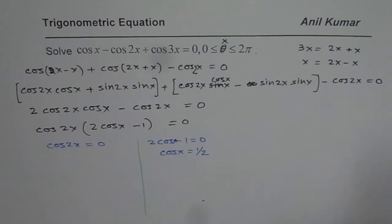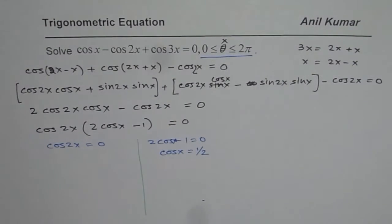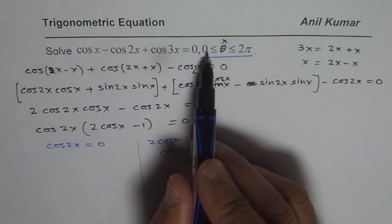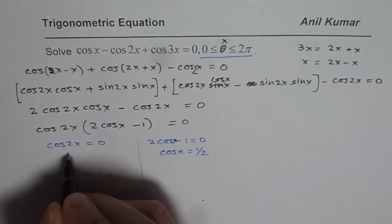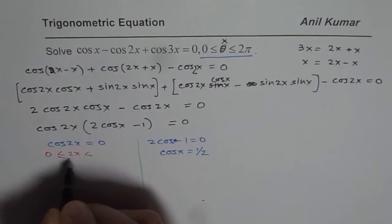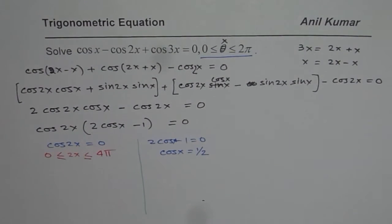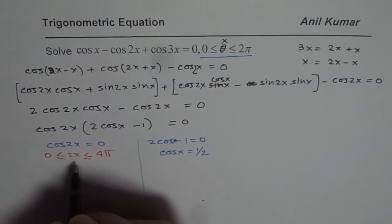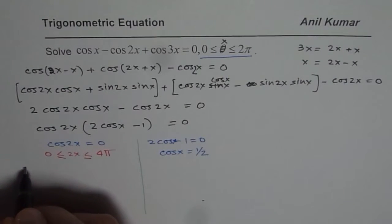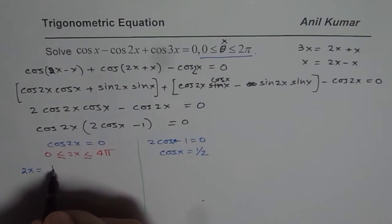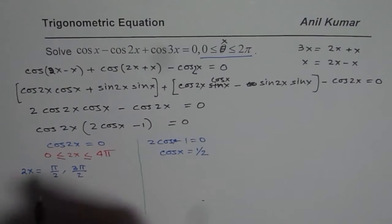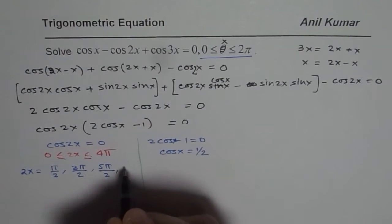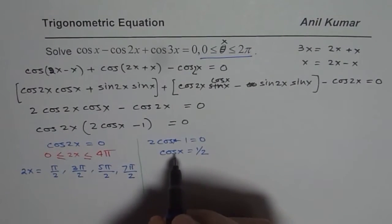We have cos 2x equals 0. We are working in the domain of 0 to 2π. When we say cos 2x is equal to 0 in the domain of 0 to 2π, then for 2x, we have to multiply this. So for 2x, the domain becomes 0 to 4π. Cos function is 0 for π/2 and 3π/2. So we have 2x equals π/2, 3π/2. Now we have to go one more circle. That means add 2π to this. That is 5π/2 and 7π/2.